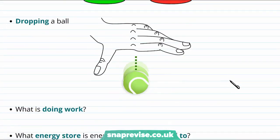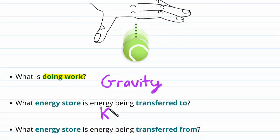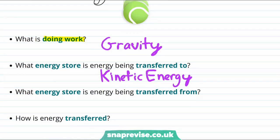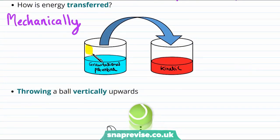Let's take a look at another example: dropping a ball from high up. This time the thing doing the work is a little bit more hidden. The thing actually causing the ball to move downwards is gravity, so it's gravity that's doing the work. The energy store the energy has been transferred to is kinetic energy, since initially the ball wasn't moving and now it is. The energy store being transferred from is gravitational potential energy, since before it was higher up and now lower down. And we would say that energy was transferred mechanically — gravity was essentially pulling on the ball — so overall energy has been transferred from the gravitational potential store to the kinetic energy store.